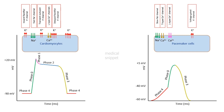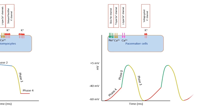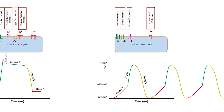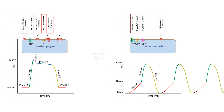After the membrane potential reaches minus 60 millivolts, due to the continuous slow depolarization of pacemaker cells, another action potential is generated, and the cycle repeats itself. This explains the automaticity of pacemaker cells. It should be noted that there is no phase 1 and 2 in pacemaker cells. Let's discuss the antiarrhythmic agents in the next video.